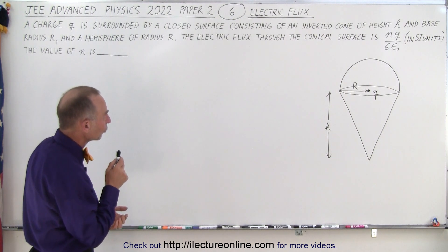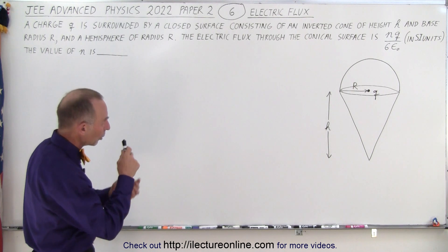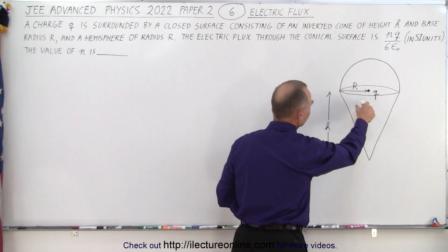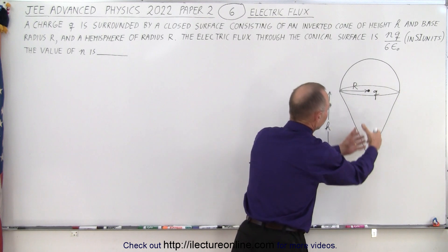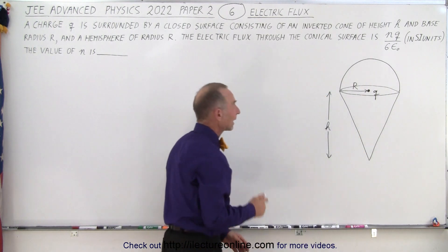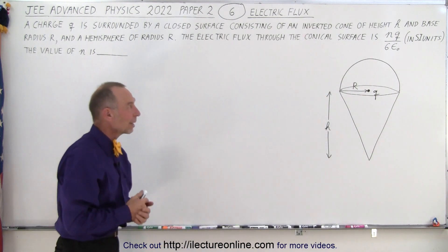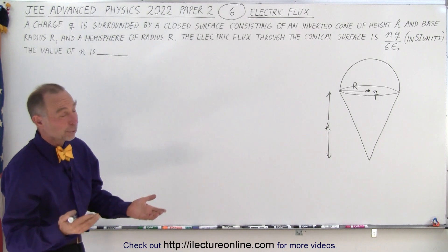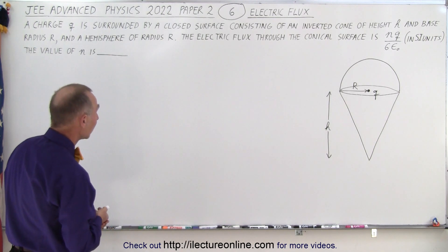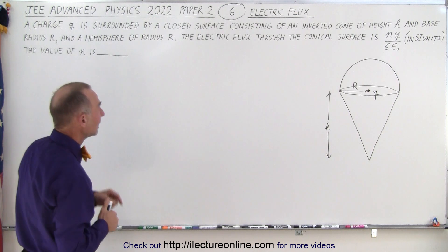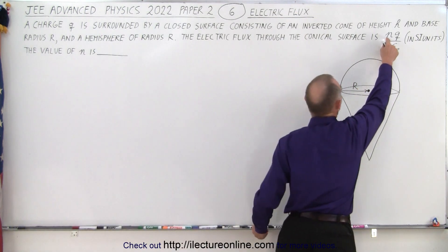The electric flux through the conical section, or the conical surface. So we want to know the electric flux through this part of the surface, the conical surface. They claim it's NQ over 6ε₀, where ε₀ of course is the permittivity of free space. They want it in SI units, and the value of N is what we need to determine.